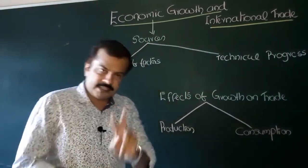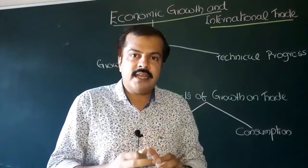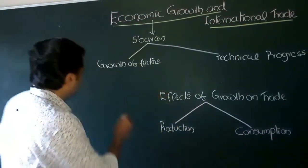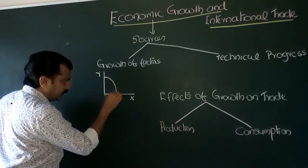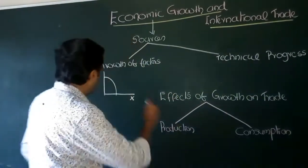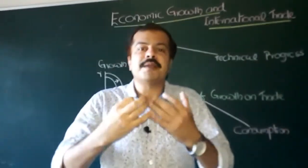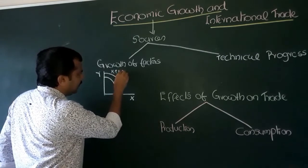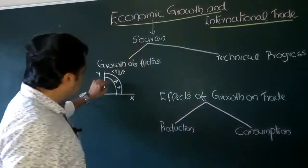When it comes to growth of factors of production, if there is an increase in the endowment of both factors of production in the same proportion, then our production possibility curve will shift towards the right in an equi-proportional manner. So if we have two commodities — commodity X and commodity Y — and the endowment of both labor and capital increases in the same proportion, the production possibility curve will shift towards the right evenly in all directions.